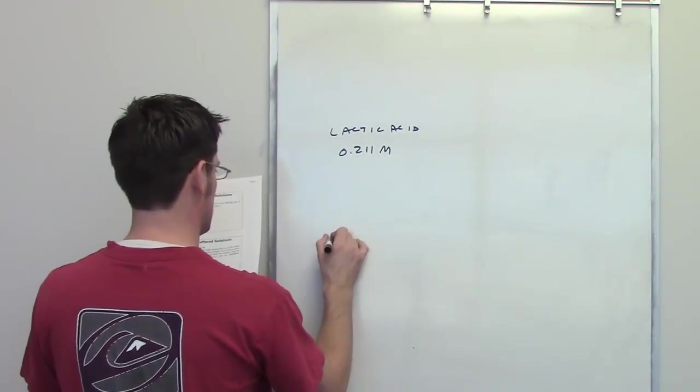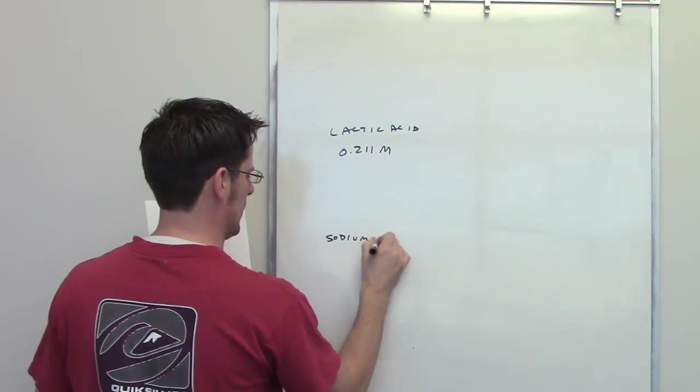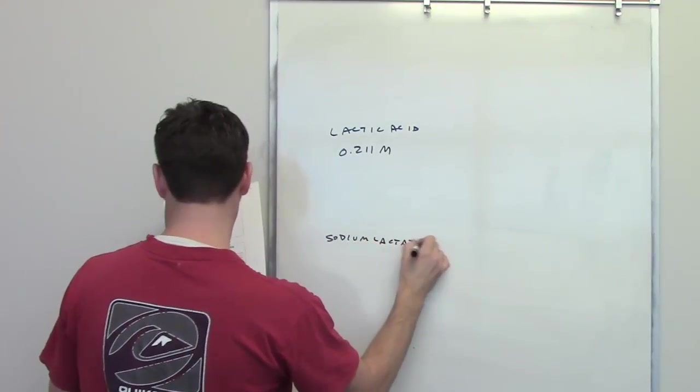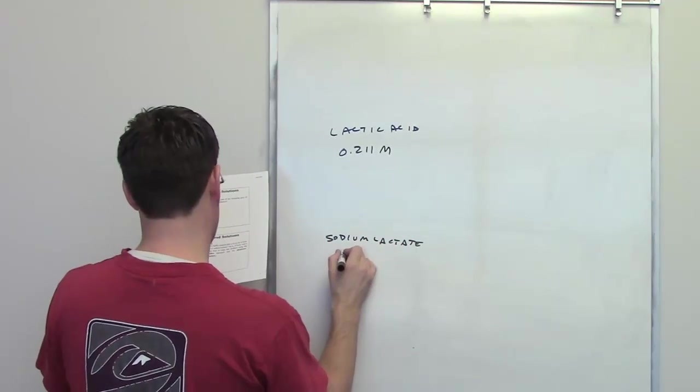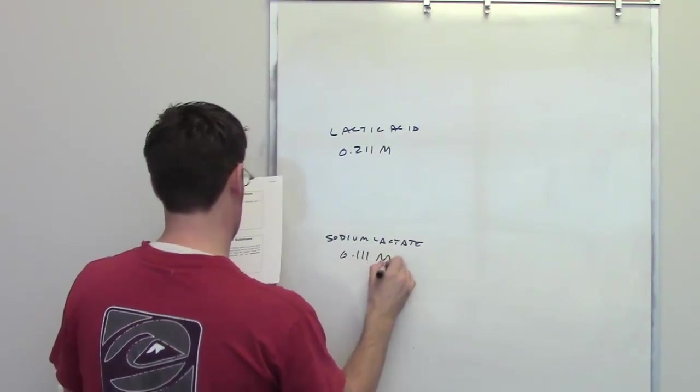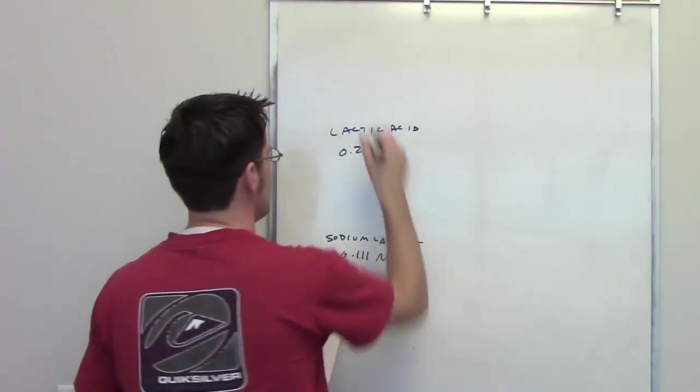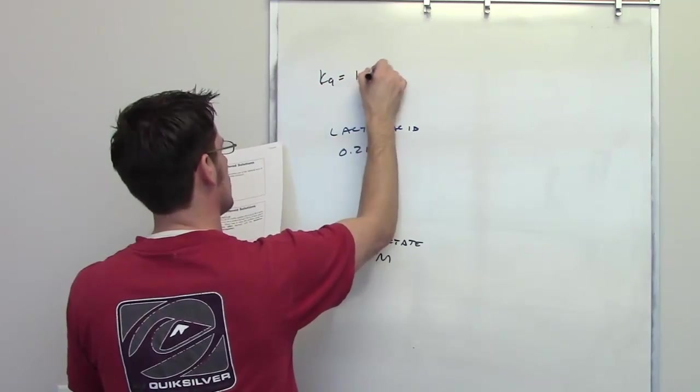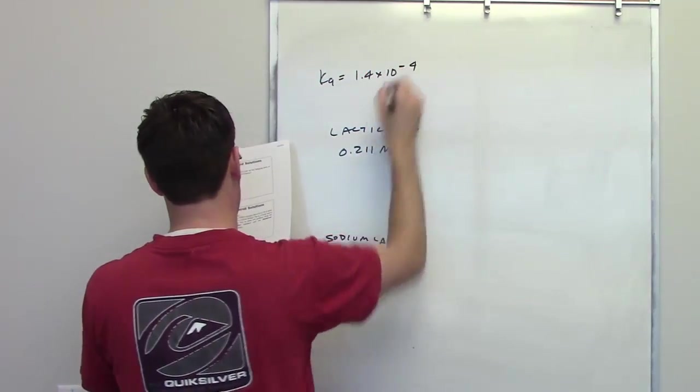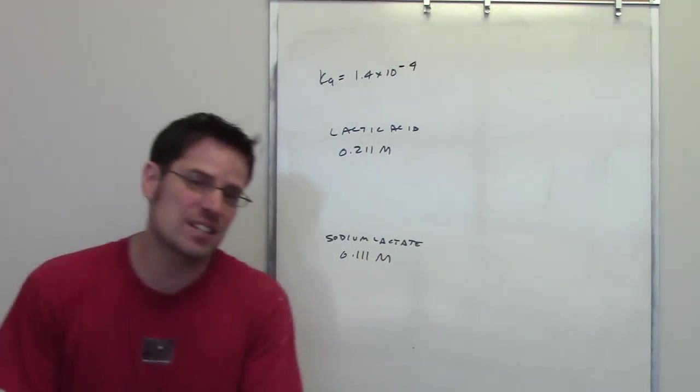I'll write sodium lactate down here. It says that it is 0.111 molar in sodium lactate. It then gives us the Ka of lactic acid as being 1.4 times 10 to the negative 4th. It tells us, or asks us, to solve this problem using two different approaches.